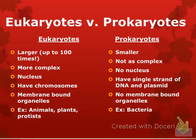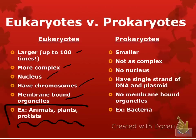Eukaryotes are larger, more complex. They have a nucleus, they have chromosomes, membrane-bound organelles — really important that you know these examples. Prokaryotes, then, are the opposite: smaller, not as complex, no nucleus. Prokaryotes have a single strand of DNA. Chromosomes, as you know, are made of DNA, but prokaryotes just have a single strand. And there are no membrane-bound organelles — the example being bacteria.